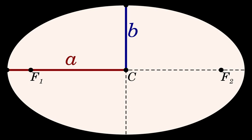The orbiting body's path around the barycenter and its path relative to its primary are both ellipses. The semi-major axis is sometimes used in astronomy as the primary-to-secondary distance when the mass ratio of the primary to the secondary is significantly large. Thus, the orbital parameters of the planets are given in heliocentric terms.